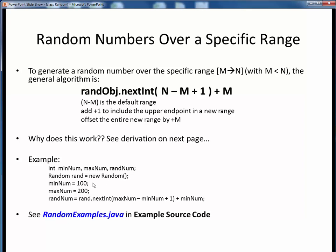Here is an example of how we could generate a random number over the range 100 to 200. As always, we start by creating a new random object, or rand in this case, using the default constructor. Here then are the values for the minimum and maximum value parameters, 100 and 200. Then according to the general form shown above, we simply call the next int method with the maximum and minimum desired values, and then offset the result by the minimum value.